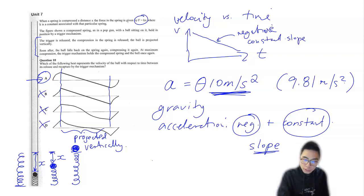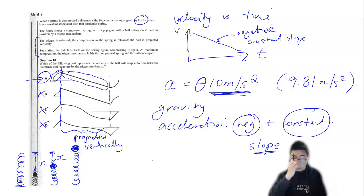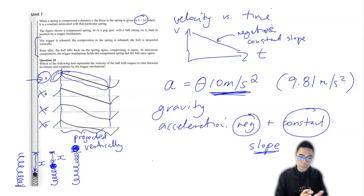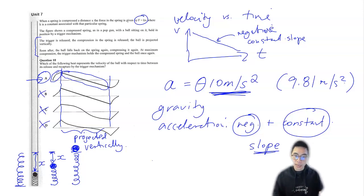So we've just explained why the first portion of option A is correct and why that middle region of the graph is correct as well. The final region of the options is essentially a mirror image of what's going on at the very beginning — the ball goes back onto the spring and is under the action of the spring again, so we'll have a similar kind of shape.